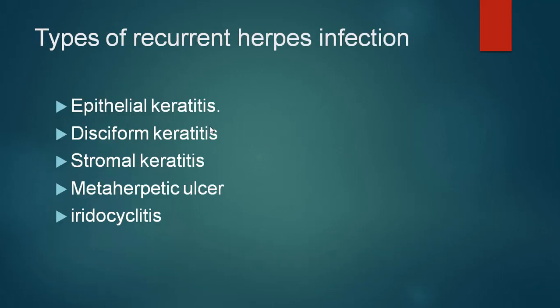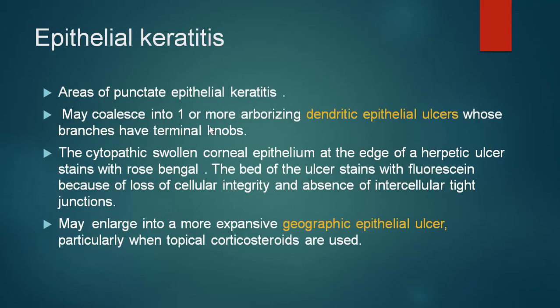There are different types of recurrent herpes infection manifestations, including epithelial keratitis, disciform keratitis, stromal keratitis, metaherpetic ulcer and iridocyclitis. In epithelial keratitis, there may be punctate lesions which may coalesce into one or more arborizing dendritic epithelial ulcers. These dendrites have terminal knobs and are very typical of herpes simplex keratitis. When stained with rose bengal and fluorescein, the bed of the ulcer stains with fluorescein due to loss of cellular integrity, while the margins are stained by rose bengal because of dead and devitalized epithelial tissue.